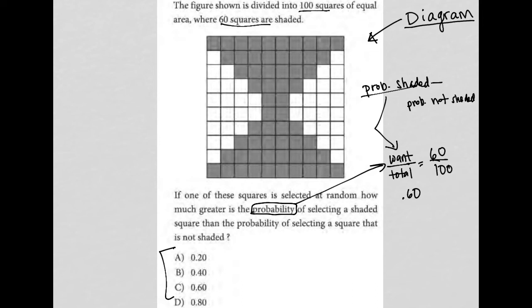And then probability not shaded, what's that? As a want over total. In this case now, what I want is the not shaded. So if 60 squares are shaded and I have a total of 100 squares, that means that 40 of those squares are not shaded. So that decimal would be 0.40.